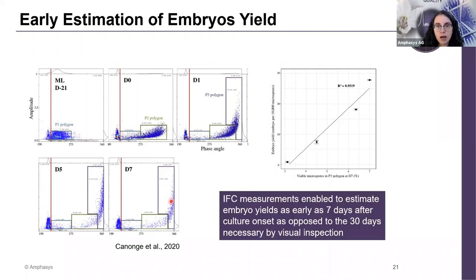Their amount after seven days correlated with the amount of embryos found after 30 days of culture, as they could observe visually. So for the first time using IFC, they were able to predict — only seven days after the onset of the culture — the amount of embryos they would get at the end of the process. This was something they were not able to do before using traditional microscopy techniques, mostly due to the limited sample size you can analyze by microscopy, whereas with IFC you can have a much bigger sample size — more than hundreds of cells per measurement.